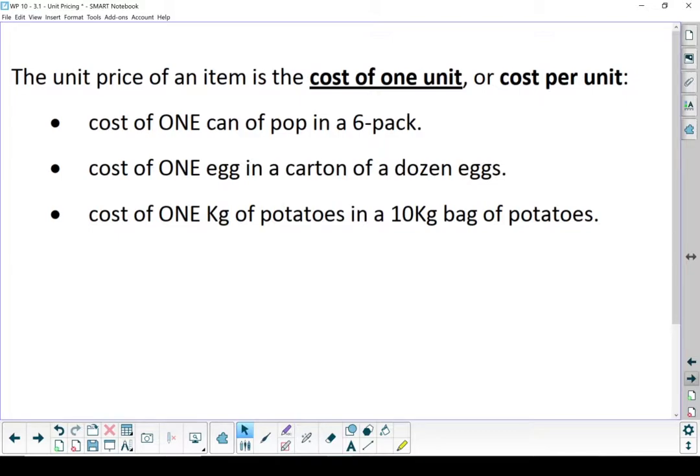So if you buy a six-pack of pop, the unit price is how much one can out of that case costs. Or if you buy a dozen eggs, it's what one egg in that carton of a dozen eggs costs. Or in the case of a 10-kilogram bag of potatoes, it's what one kilogram costs.